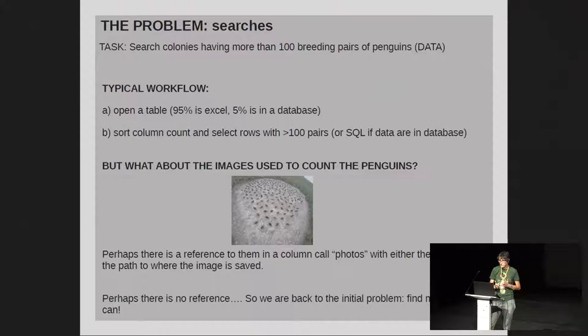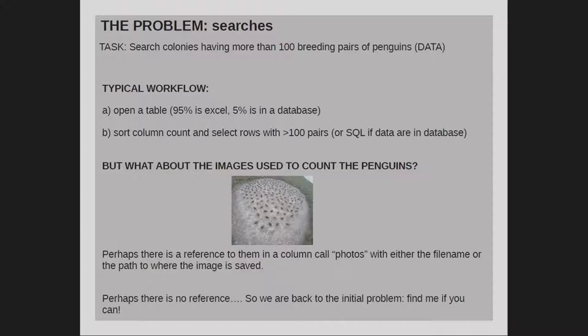For instance, if you want to search for those colonies of penguins that have more than 100 breeding pairs, and the image has already been analyzed at some point in the workflow, generally the scientist would open an Excel file. About 5% of the time this table is actually in a proper database, so the person can run an SQL query, but generally they will sort by the column called 'count.' But then the problem is: where are the images? Just as we use maps because it's much easier to visualize what is happening, the same is true for images.